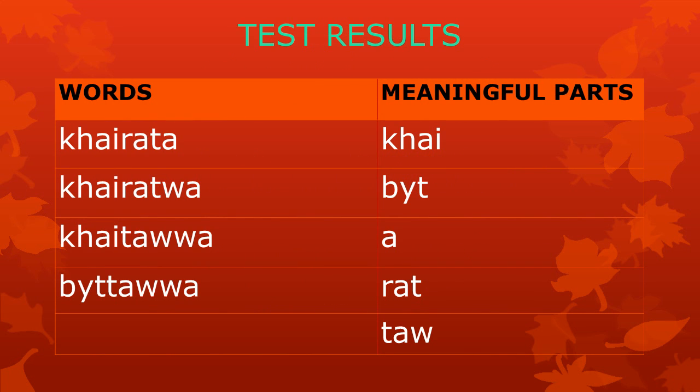Here are our test results. We have discovered five meaningful parts: kai, bt, a, rat, and tau.